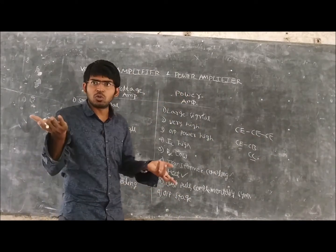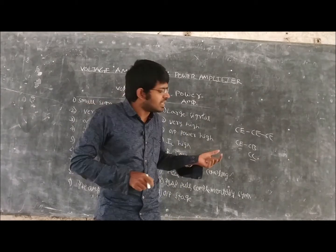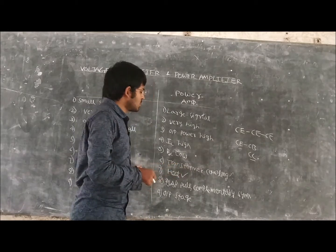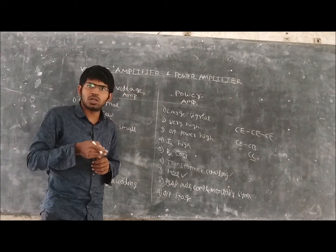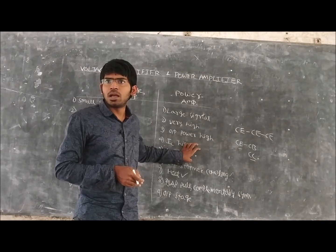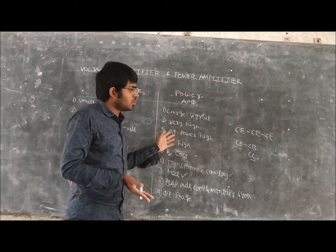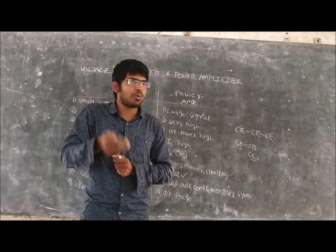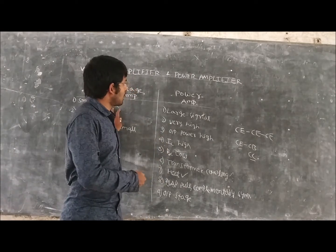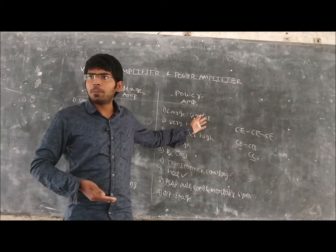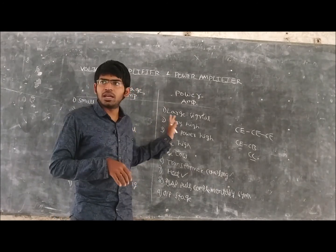In the power amplifier, we do not use cascading; instead we use the push-pull amplifier and complementary symmetry configurations. These terms are specific to the power amplifier, whereas cascading is used in the voltage amplifier. The voltage amplifier is used as a pre-amplifier in the initial stages for amplifying the voltage, whereas the power amplifier is used just before the output device. We do not use the power amplifier in the first stage, and we do not use the voltage amplifier in the last stage before the output device. This is the key difference between the voltage amplifier and the power amplifier.